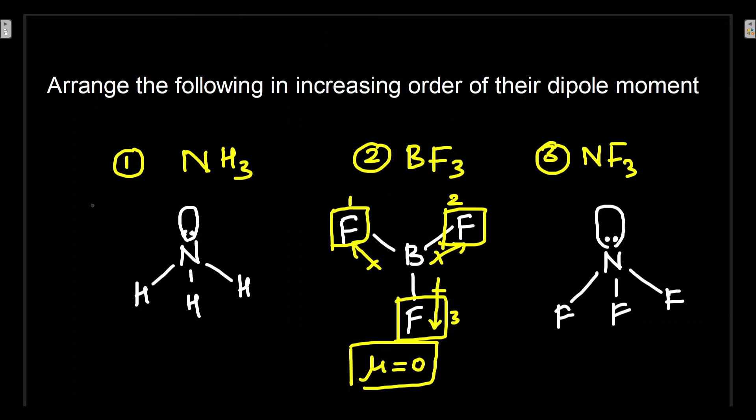Now very interesting cases between NH3 and NF3. You may think that because BF3 is zero, NF3 may also be zero, but you should know that there is a lone pair. NH3 also has a lone pair, but the difference here is N here is the most electronegative in NH3.